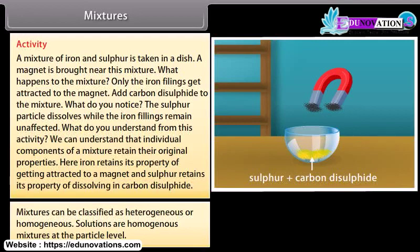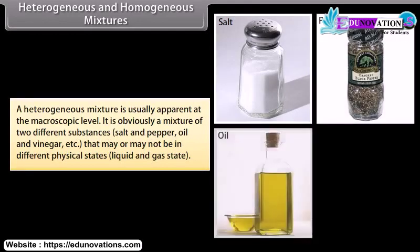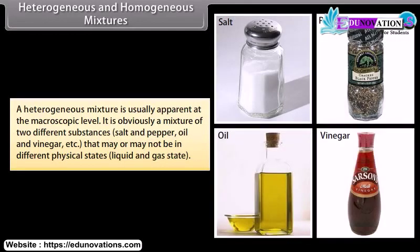Mixtures can be classified as heterogeneous or homogeneous. Solutions are homogeneous mixtures at the particle level. A heterogeneous mixture is usually apparent at the microscopic level — it is obviously a mixture of two different substances, such as salt and pepper, or oil and vinegar.